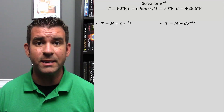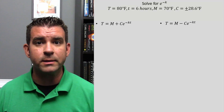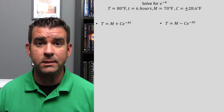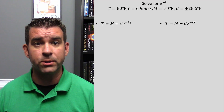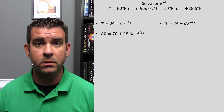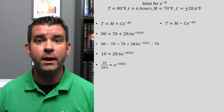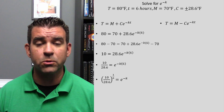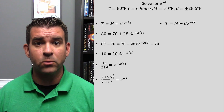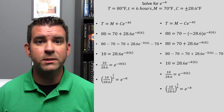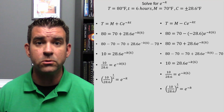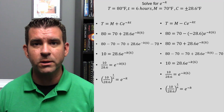Now we can solve for K. We will solve for e to the negative K since it makes the next equation much easier. Using our control data: at t equals 6 hours, temperature equals 80 degrees. We plug that into our formula, do a little subtraction and division, and take the sixth root of it all to get e to the negative K. Doing the same on the other side yields the same answer. So it doesn't matter which formula we use, as long as we use the correct formula and the correct C.